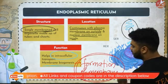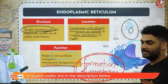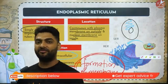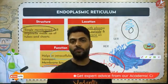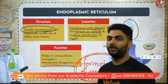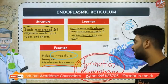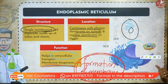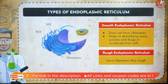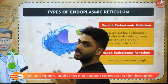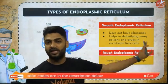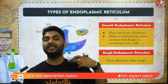Membrane biogenesis means formation of membrane — especially the plasma membrane. The plasma membrane is made of lipids and fats, so the lipids that are used to make the plasma membrane come from the nucleus and travel through the endoplasmic reticulum. The endoplasmic reticulum is of two types: smooth and rough. Smooth ER does not have ribosomes — ribosomes are the protein-synthesizing organelles.